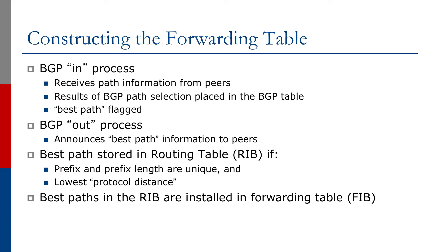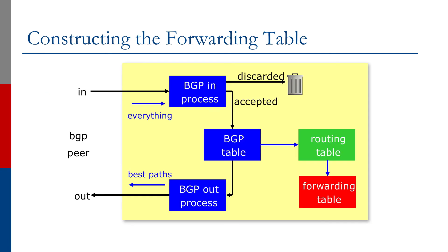Finally, the routes from the BGP RIB are installed into the global RIB. It's possible that the exact same prefix is also learned via another protocol, such as OSPF or a static route. In that case, the route with the lowest protocol distance, or admin distance, is chosen to go into the global RIB. The route from the global RIB then propagates to the forwarding information base, or FIB, and this is what the router uses when forwarding individual packets.